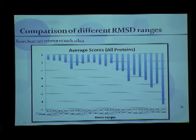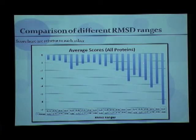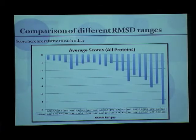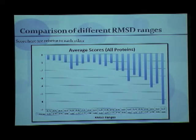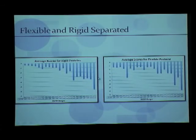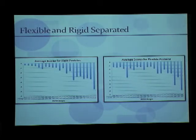We normalized the scores and plotted the average score for a particular RMSD value against the RMSD range. The scores are relative to each other, so absolute values make less sense. We can see that a very high RMSD range such as 5–6 would predict that the whole protein is flexible and give a very loose result. Taking all proteins in total, a lower RMSD range — say 0–1 or 0–3 — would be the best way to go about predicting flexibility. Segregating rigid and flexible proteins, we again see 0–1 and 0–2 are best for rigid, and up to 0–3 or 0–4 for flexible proteins.